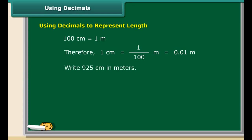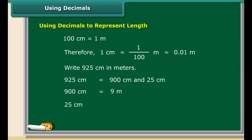925 centimeters may be split as 900 centimeters and 25 centimeters. 900 centimeters are equal to 9 meters. 25 centimeters are equal to 25 upon 100 meters, that is 0.25. So 925 centimeters are equal to 9.25 meters.